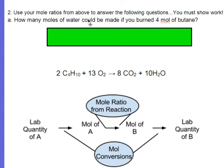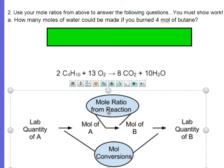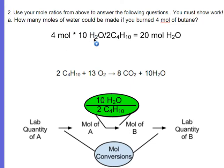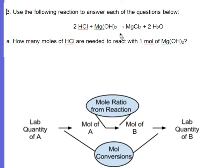Here's a mole-to-mole conversion problem using the butane reaction. How many moles of water could be made if I burned four moles of butane? Using the mole ratio of 10 waters for every 2 butanes, I take the 4 moles I start with and multiply by 10/2. That's the same as multiplying by 5, or taking 4 times 10 divided by 2. Either way you get 20 moles of water.